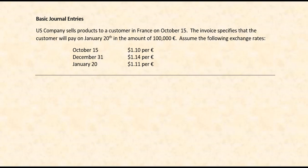Here is our scenario. A U.S. company sells products to a customer in France on October 15. The invoice specifies that the customer will have to pay on January 20 of the following year, and the selling price is 100,000 euros. Now, we need to know what the euro is going to cost on these different days, so assume the following exchange rates.